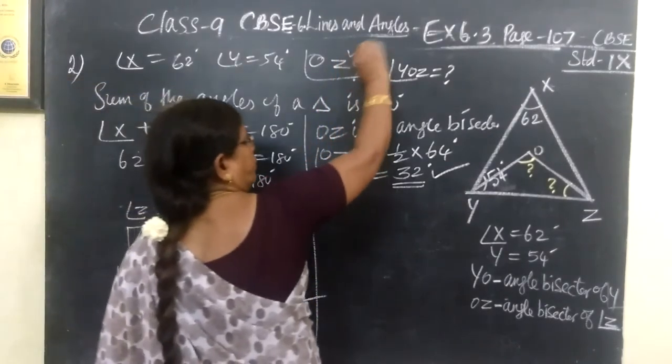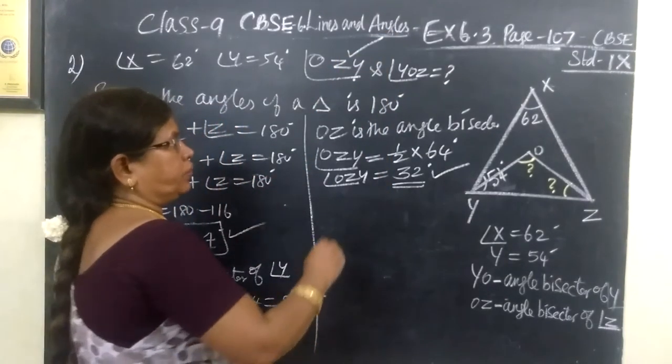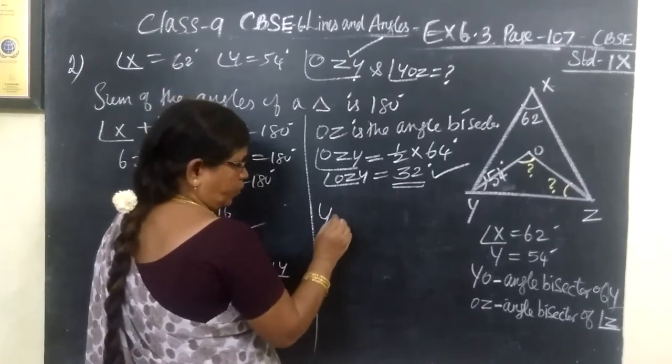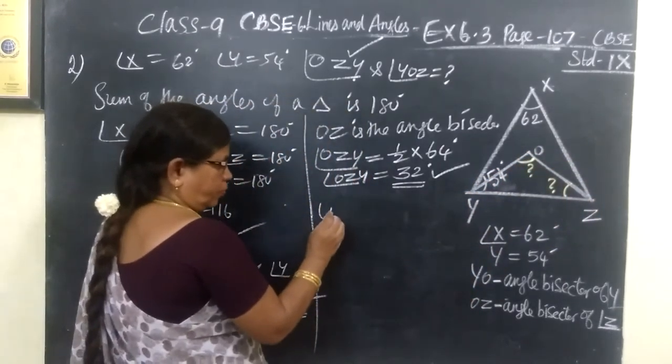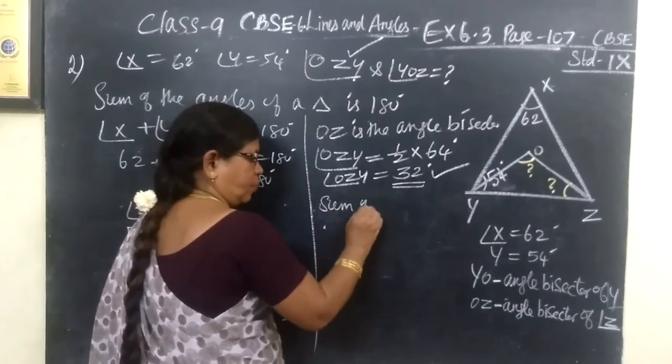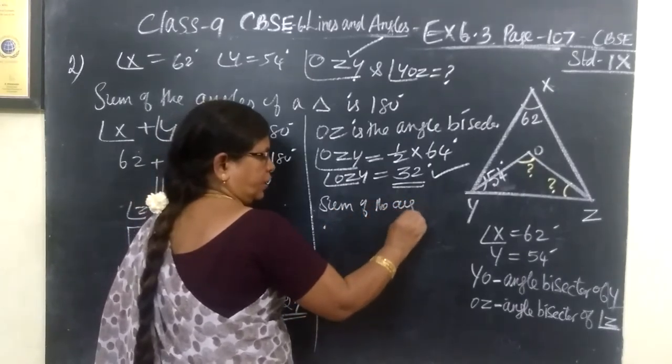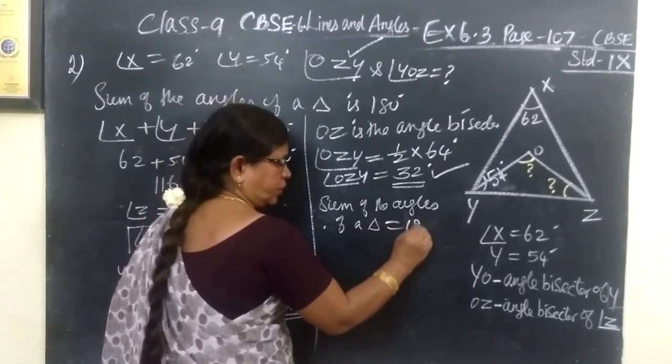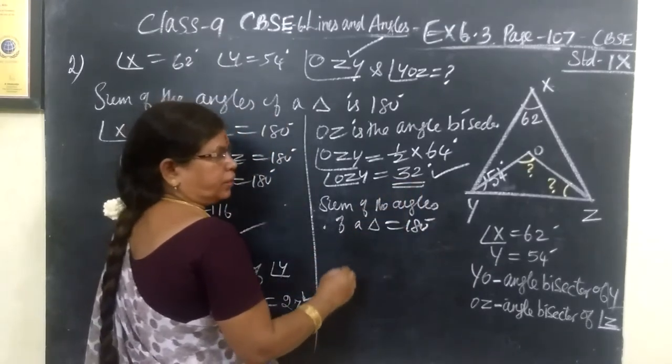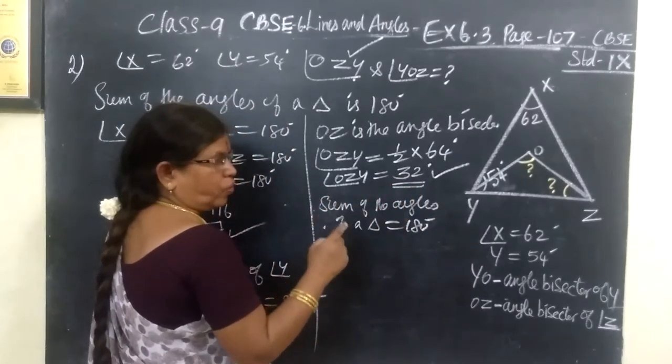So, OZY we have found. Next, we want to find YOZ. So, we know again, sum of the angles of a triangle equal to 180 degrees. So, consider the triangle OYZ.